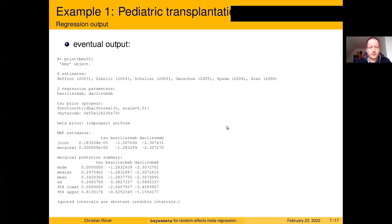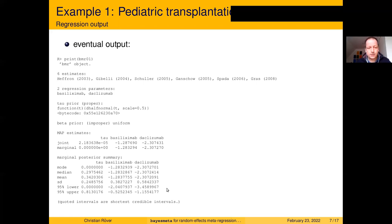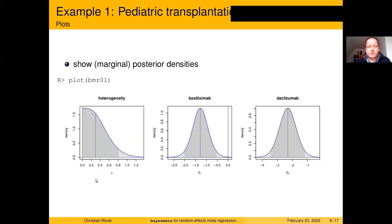Executing this command gives the default printout of the analysis output. If you're familiar with the previous base meta output, this looks very similar — it's just that now we have three parameters. We still have estimates for the heterogeneity, and now also estimates for the two regression coefficients beta_1 and beta_2, corresponding to the basiliximab and daclizumab treatments. We can also illustrate the results graphically, for example by looking at posterior densities or marginal posterior densities for tau, beta_1, and beta_2.